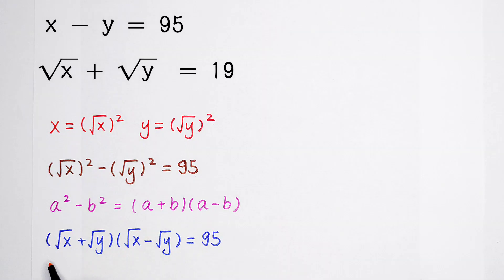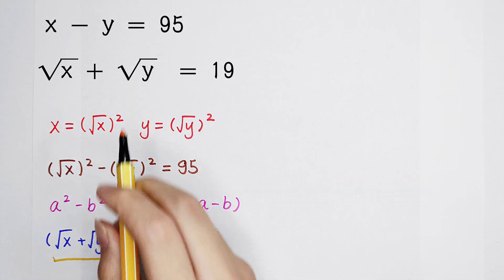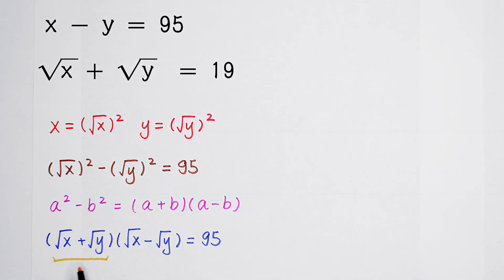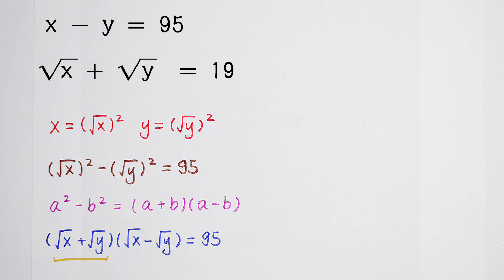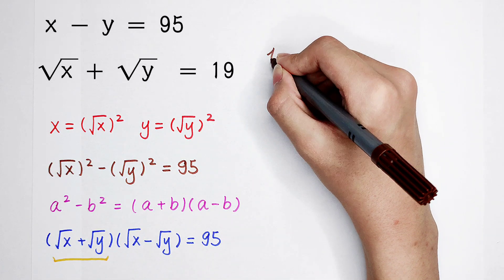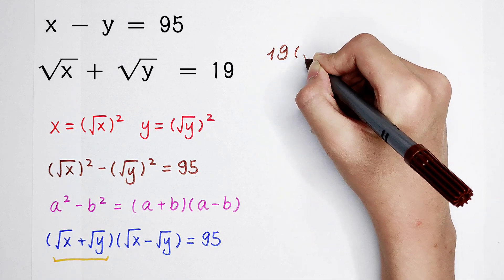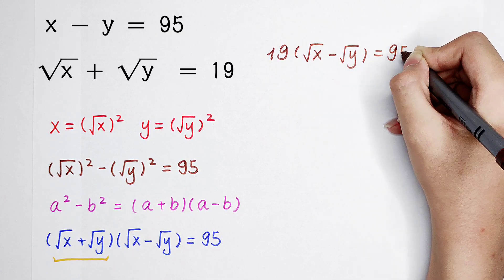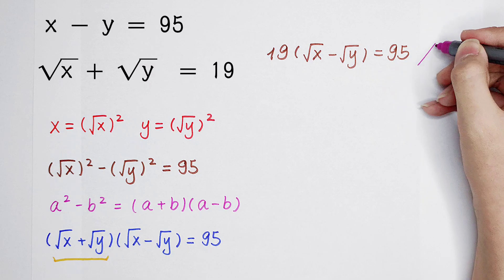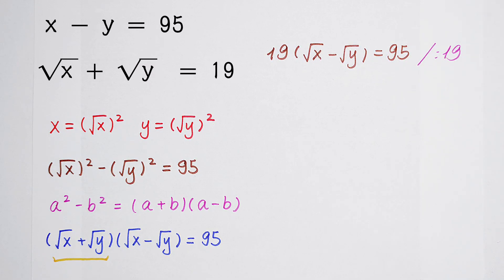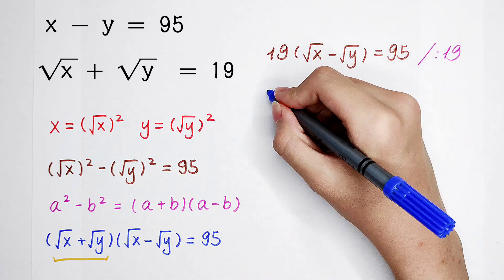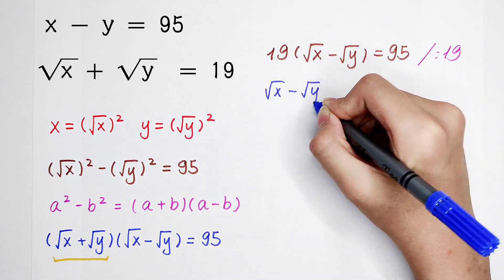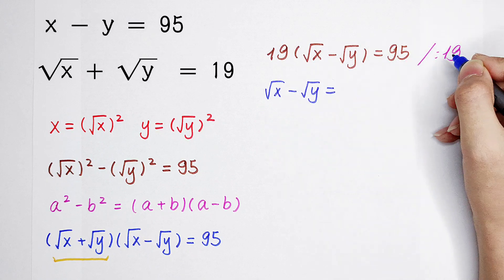We already know that the sum of square root of x and square root of y from our problem is 19. So substituting, we get 19 times square root of x minus square root of y equals 95. Dividing both sides by 19, we get square root of x minus square root of y equals 95 divided by 19, which is 5.